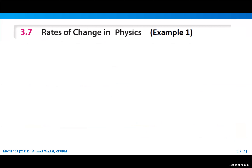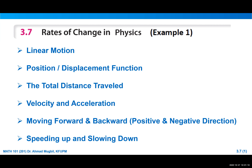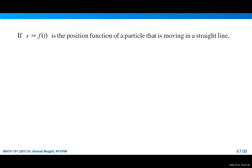We will just study example number one, which is about the rates of change in physics, especially in linear motion involving velocity, acceleration, displacement, and so on. Today we will focus more on when a particle or object is moving forward in the positive direction or moving backward in the negative direction, and also when a particle is speeding up or slowing down.